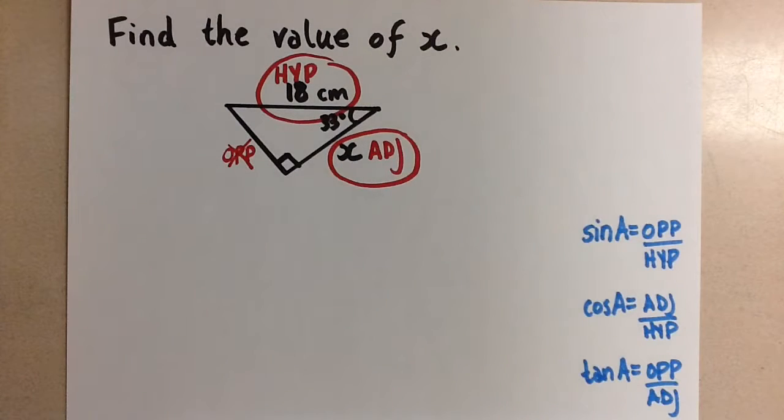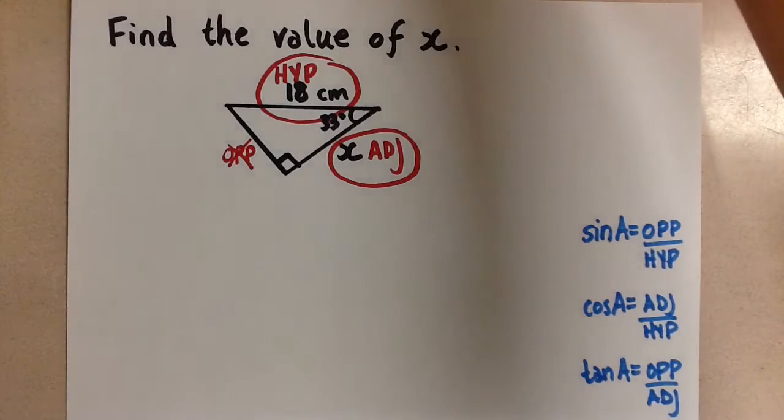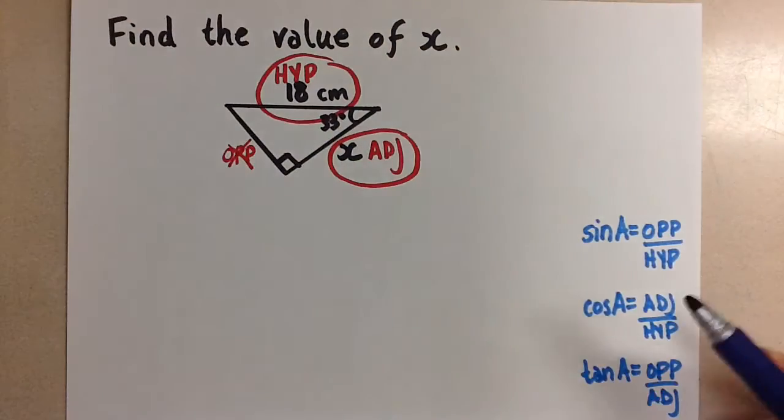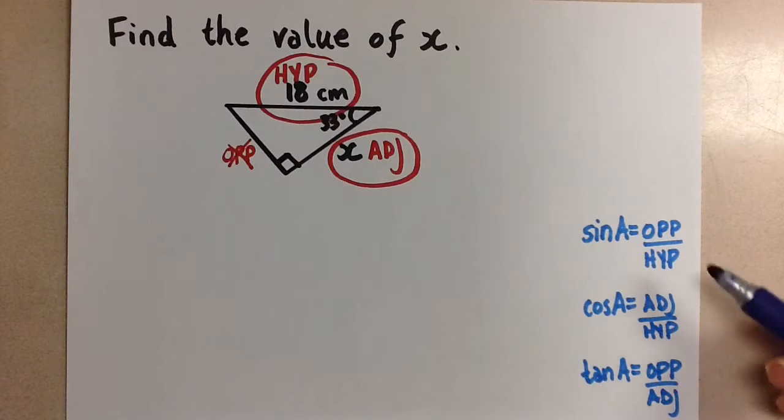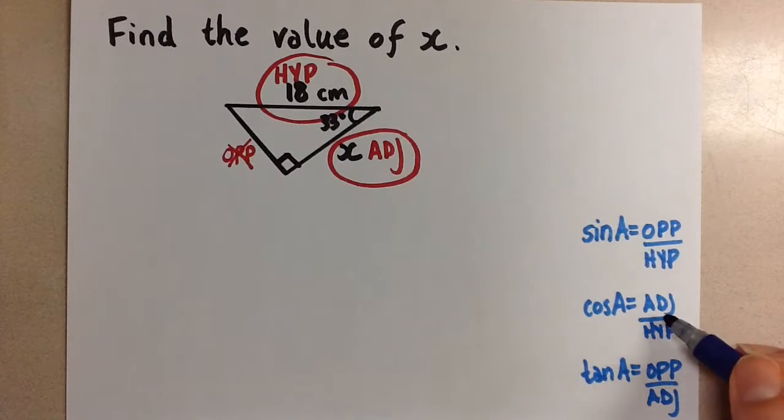Now go to your three trig ratios here, sine, cosine, tangent, and find the one that uses adjacent and hypotenuse sides. That would be the cosine ratio. So that's the one that we're going to use to solve this particular problem. You only ever use one and each ratio uses only two of the three possible sides, so there's only one possibility for your choice. So we're going to go with cosine.